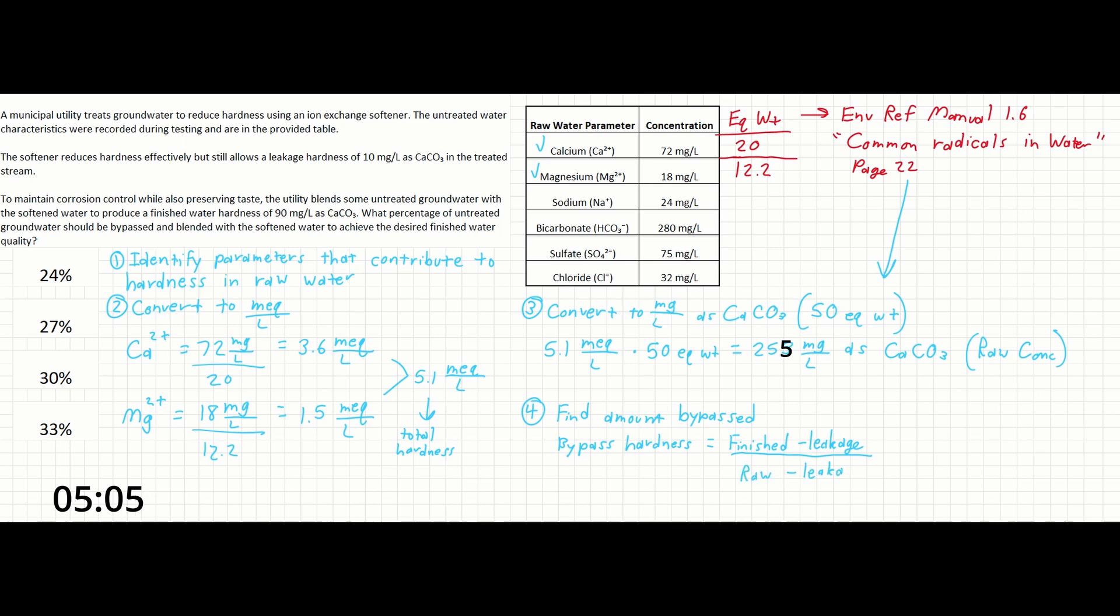The problem statement itself gives us the finished hardness of 90 milligrams per liter as CaCO3, and the leakage hardness of 10 milligrams per liter as CaCO3. On the bottom of the equation, we've calculated the raw hardness to be 253 milligrams per liter as CaCO3, and again, our leakage is going to be 10 milligrams per liter as CaCO3.